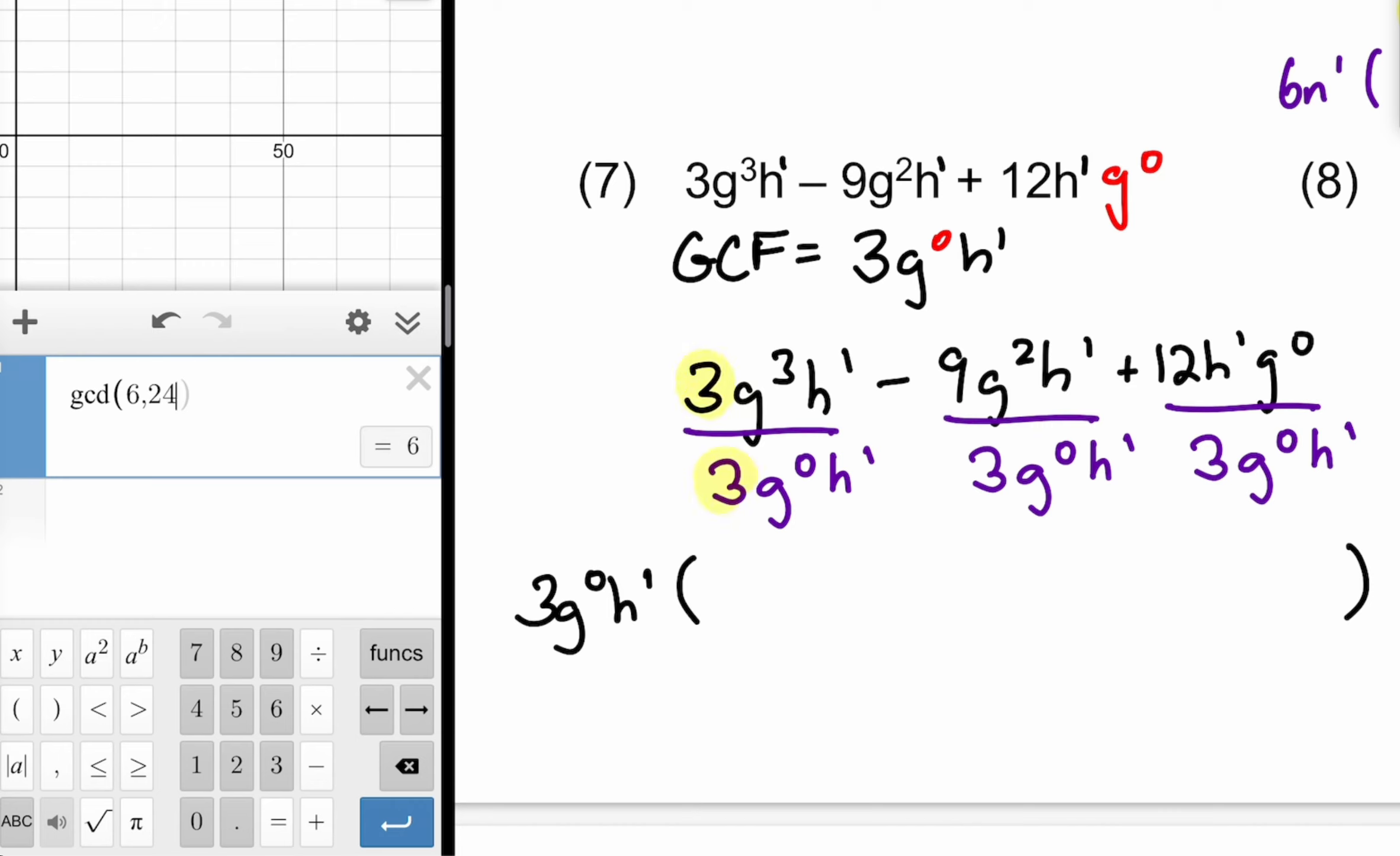So 3 divided by 3, 1. Irrelevant. 3 minus 0, 3. So G to the third is coming into my solution here. 1 minus 1, 0. H to the zeroth is 1. Irrelevant. 9 divided by 3, 3. 2 minus 0, 2. So G to the second. 1 minus 1, 0. H to the zeroth is 1. 1 multiplied by anything remains the anything that it started as. So irrelevant. 12 divided by 3, 4. We have a positive sign here that comes along for the ride.